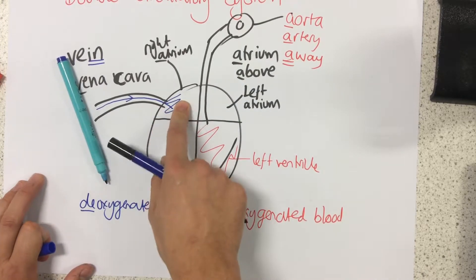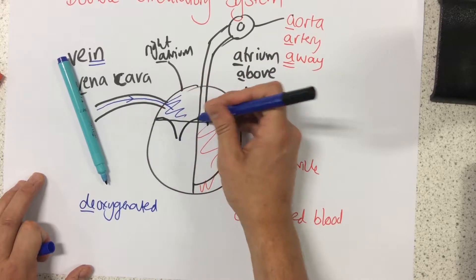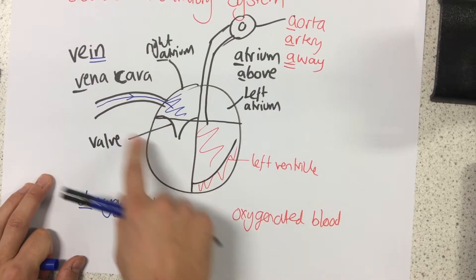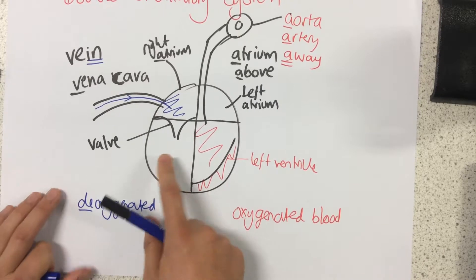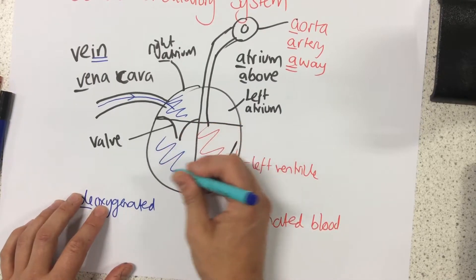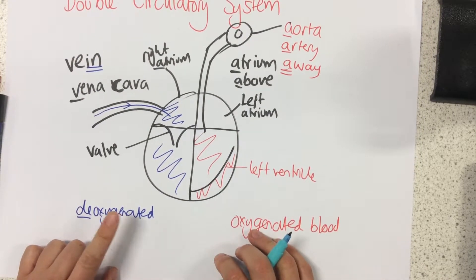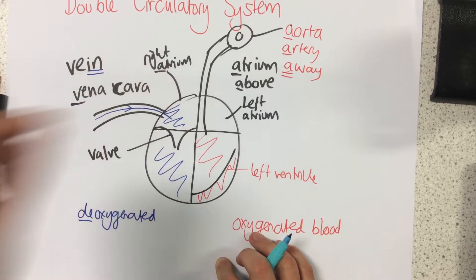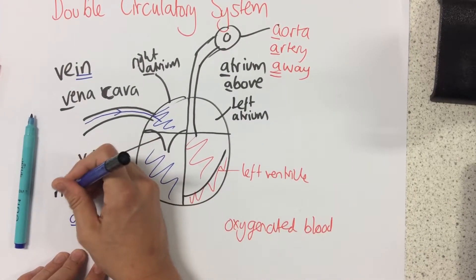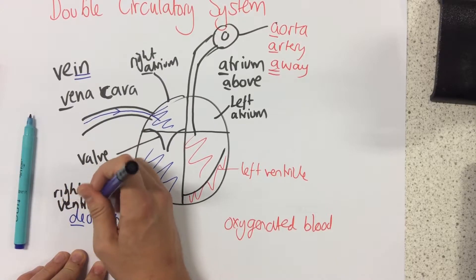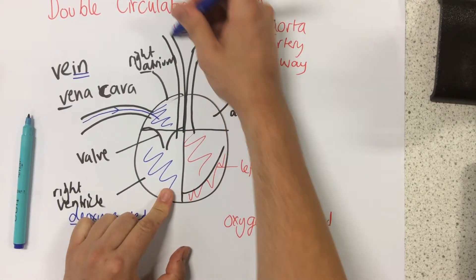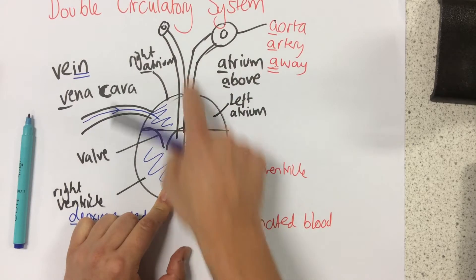To get from the right atrium to the right ventricle, we need to go through a structure called a valve. All a valve is, is something that allows the blood to keep flowing in the same direction. This blood is deoxygenated, which means it does not contain oxygen, so we want to pump it to the lungs to pick up oxygen. This is the right ventricle, and its wall contracts to pump this blood through this vessel to the lungs.